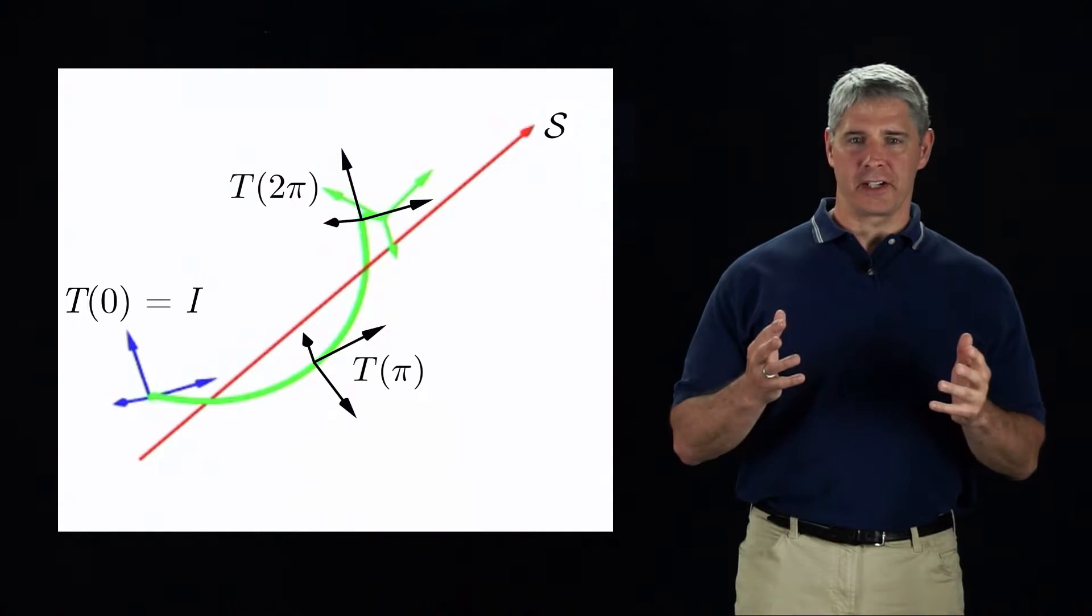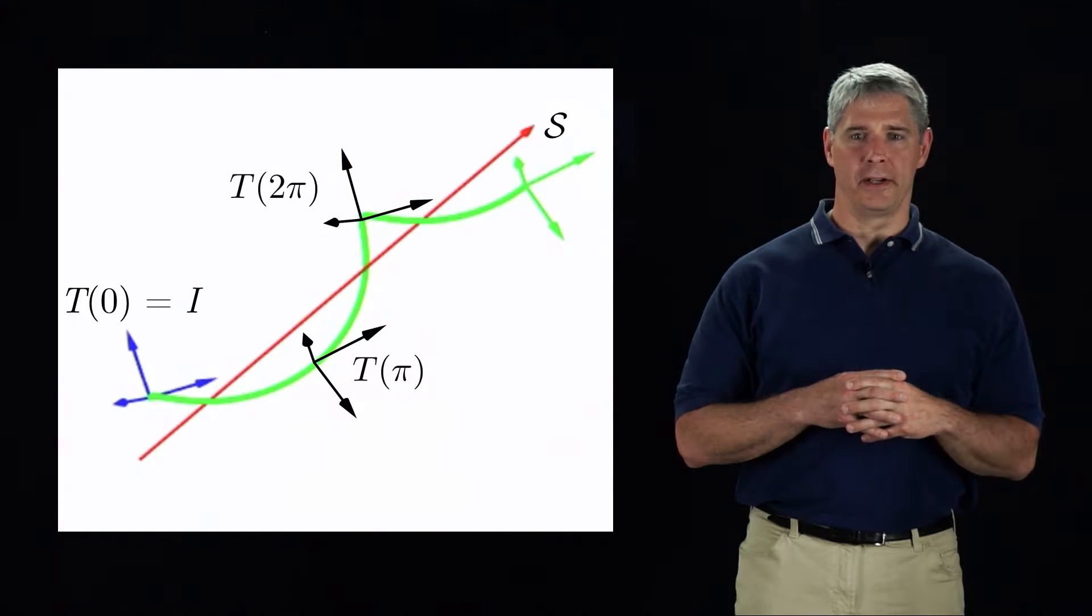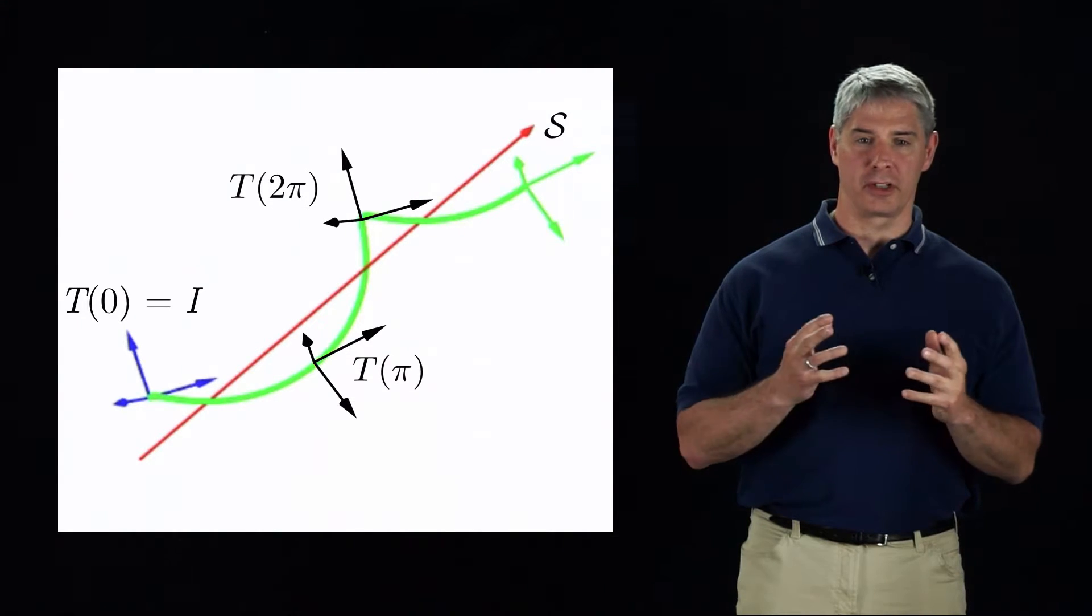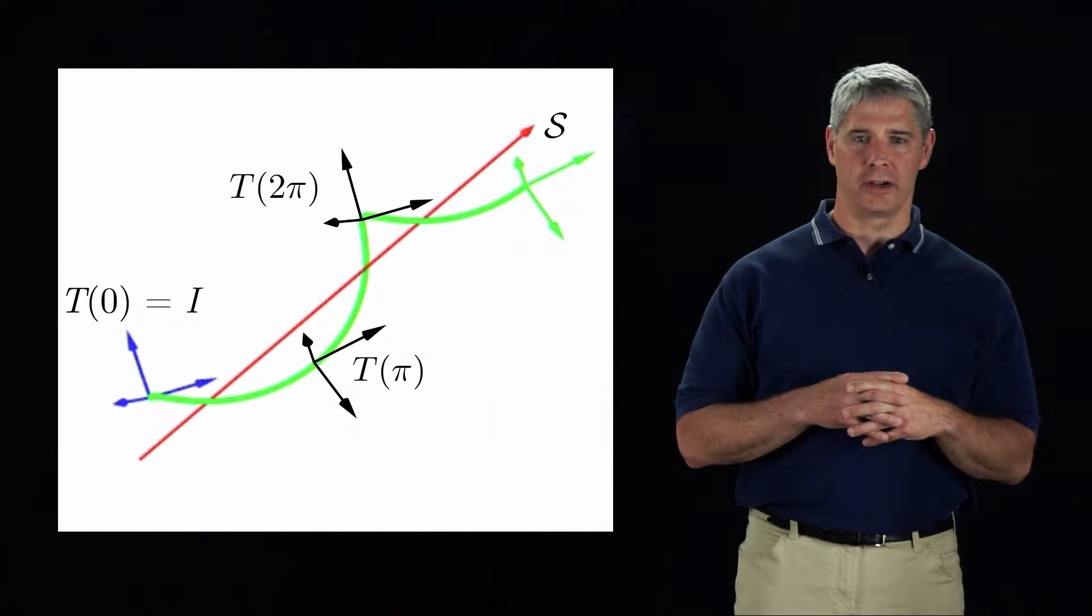These configurations are represented as transformation matrices, but an alternative representation would use six exponential coordinates, similar to the three exponential coordinates for rotation that we saw earlier.